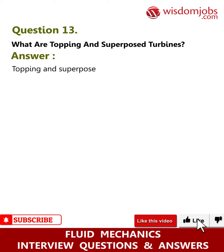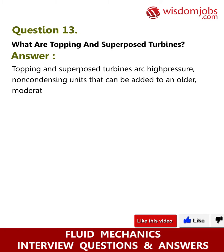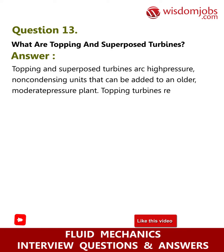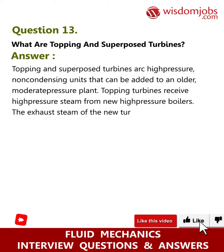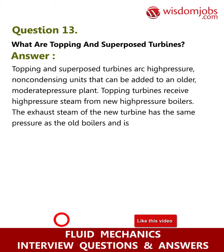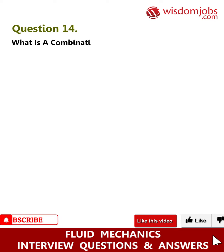Question 13: What are topping and superposed turbines? Answer: Topping and superposed turbines are high-pressure non-condensing units that can be added to an older, moderately pressured plant. Topping turbines receive high-pressure steam from new high-pressure boilers. The exhaust steam of the new turbine has the same pressure as the old boilers and is used to supply the old turbines.